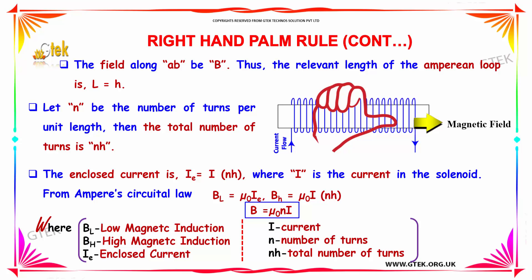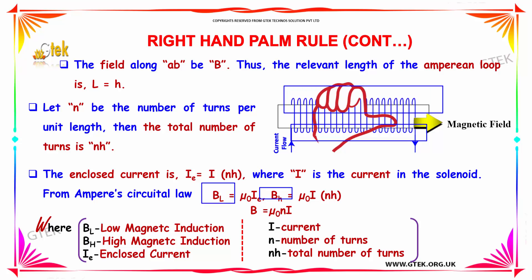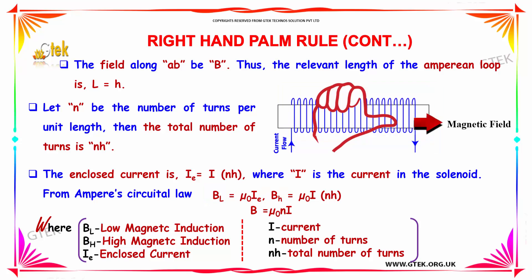So, BL is the low magnetic induction and BH is the high magnetic induction, and I is the enclosed current.